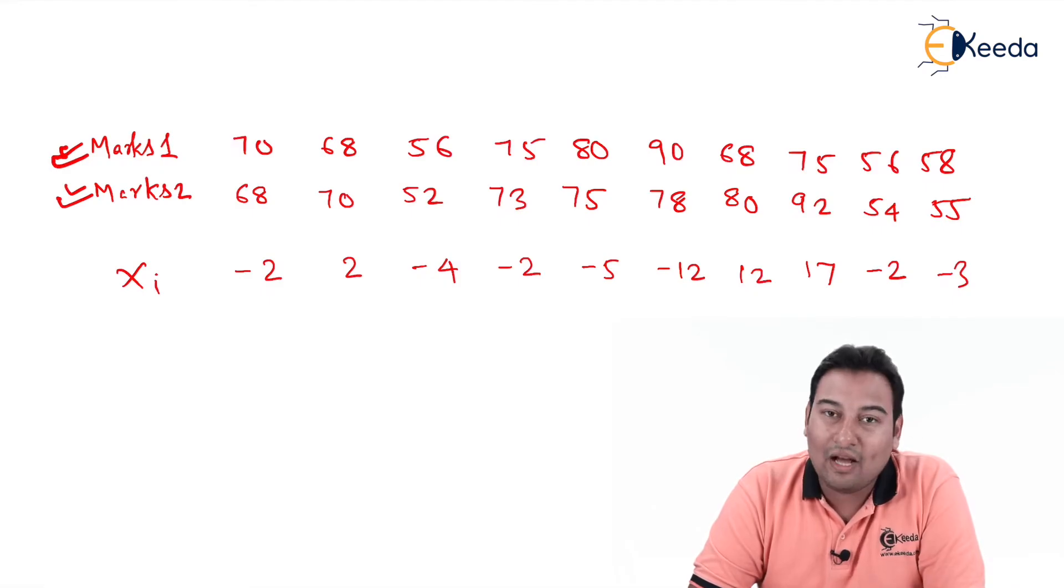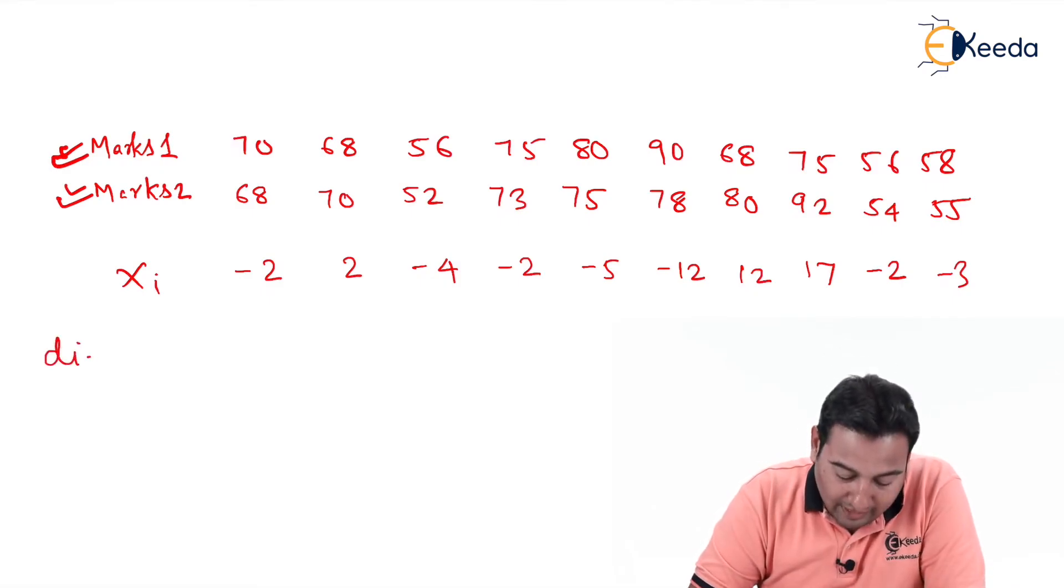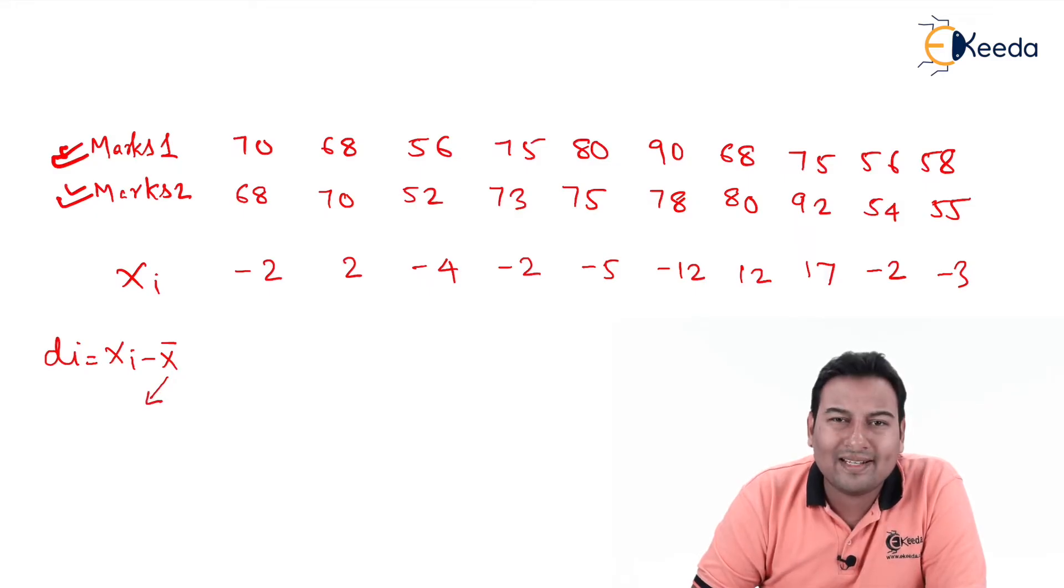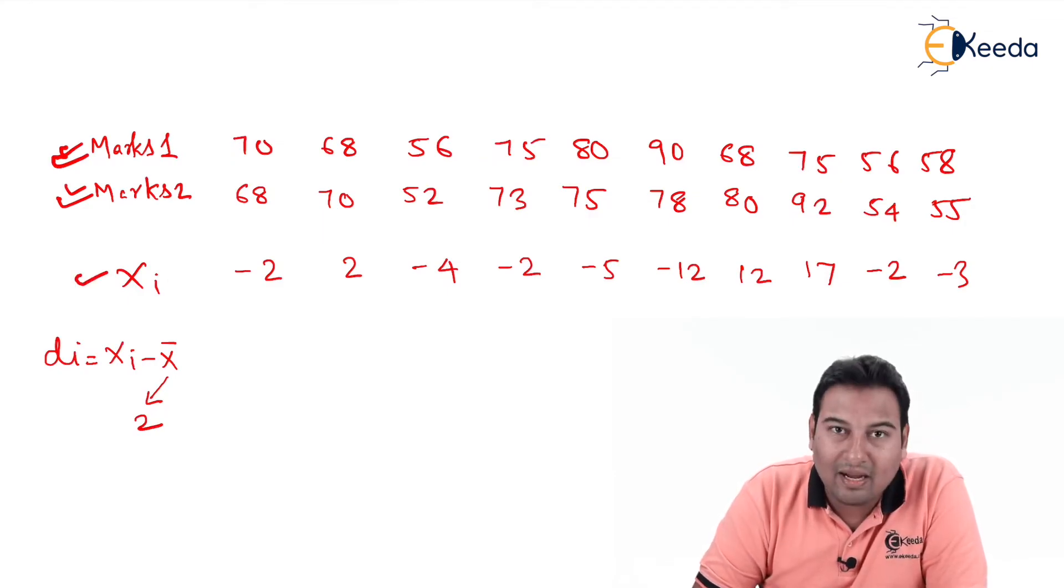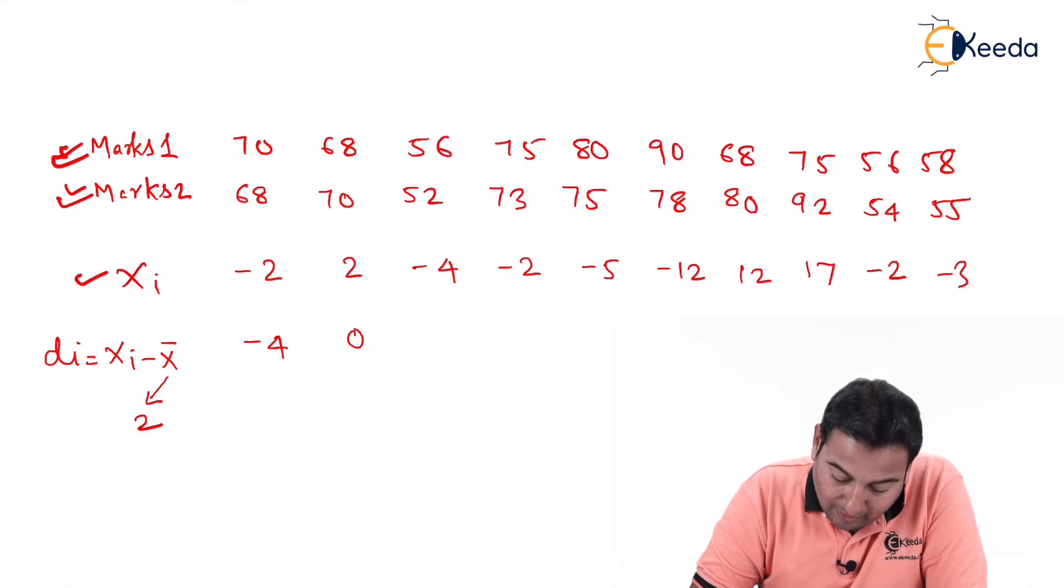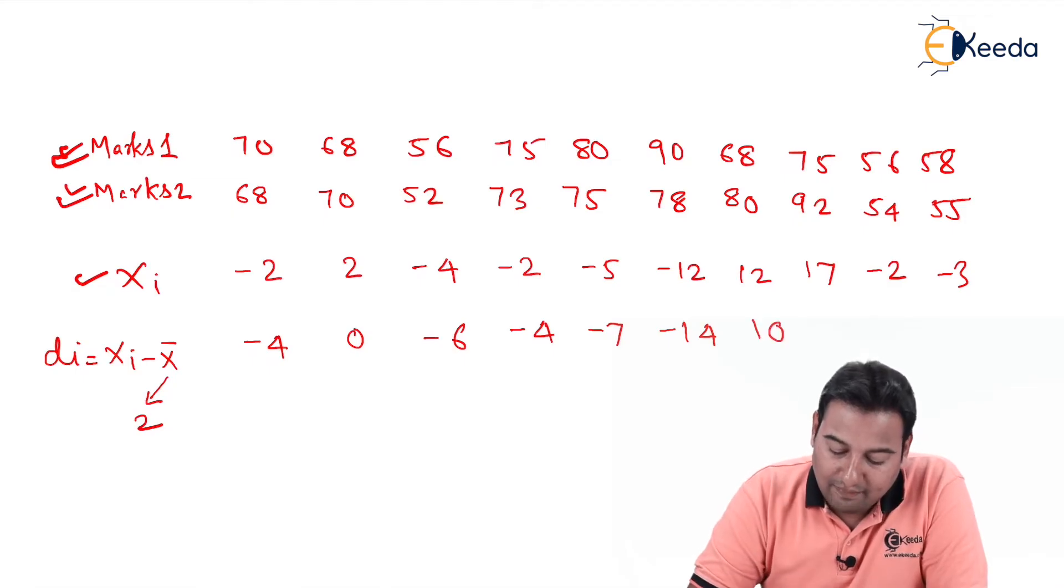This is the value of xi. Now we know we are going to calculate di. The formula is xi minus x̄, where this x̄ is assumed. I am assuming it to be 2, so xi minus 2. Minus 2 minus 2 becomes minus 4, 2 minus 2 is 0, minus 4 minus 2 is minus 6, minus 2 minus 2 is minus 4, minus 7, minus 12 minus 2 is minus 14, 12 minus 2 is 10, 12 minus 2 is 10, 17 minus 2 is 15, minus 2 is minus 2, minus 3 minus 2 is minus 5.